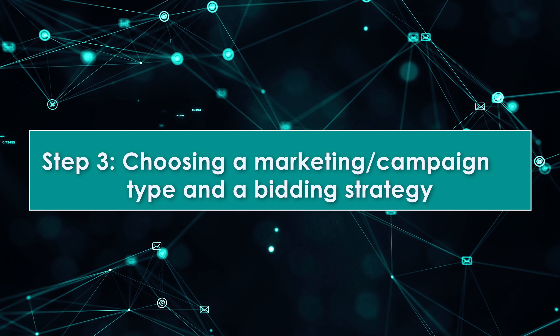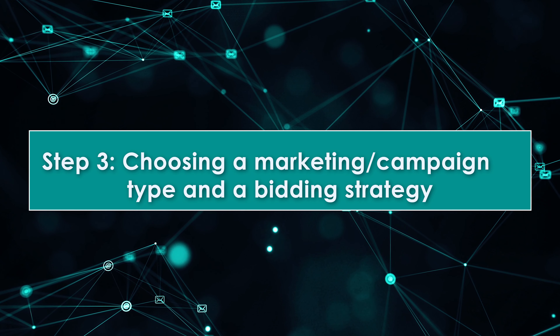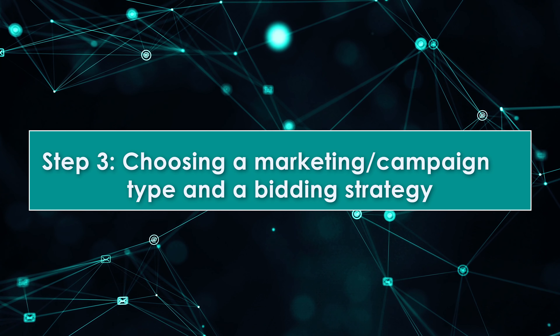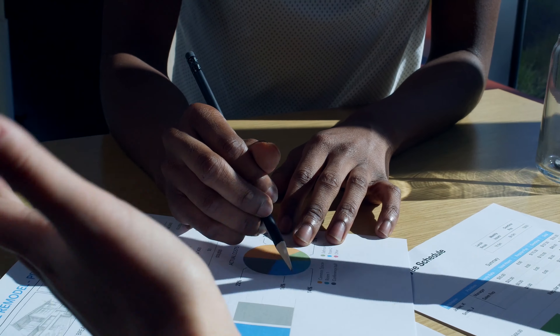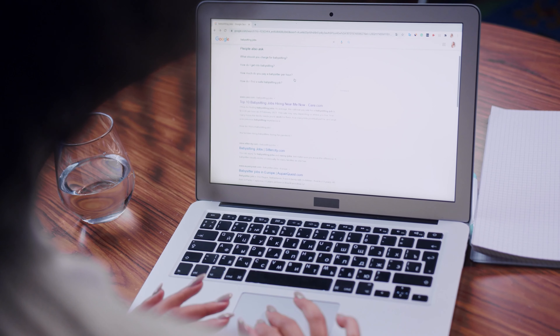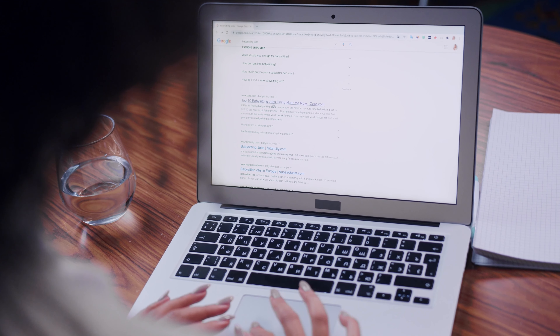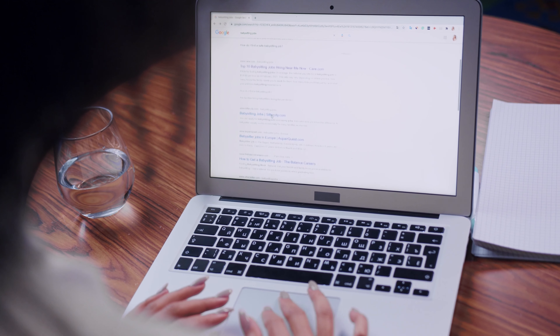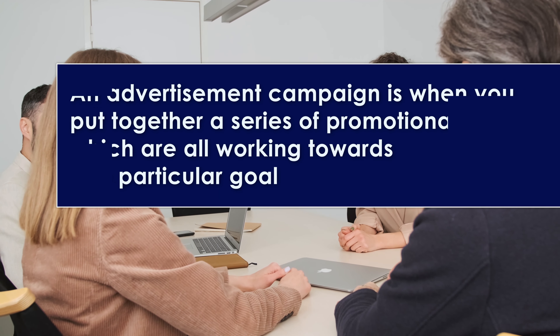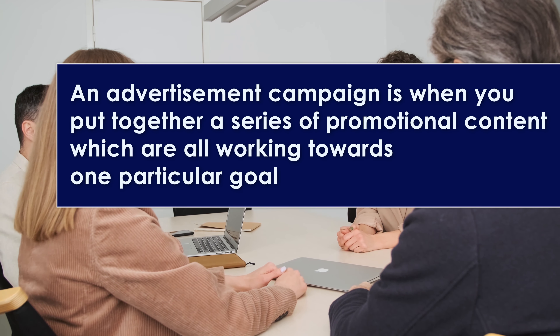Step 3: Choosing a marketing campaign type and a bidding strategy. As discussed previously in the section about SMART goals, it is always important to have specific goals. You can't go in with the mentality of 'I want to grow my business' — there are way too many variables at play to properly focus on that one goal. Instead, you need to specify exactly what you want to grow in your business and focus on one at a time through ad campaigns. An advertisement campaign is when you put together a series of promotional content which are all working towards one particular goal.